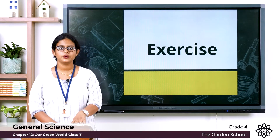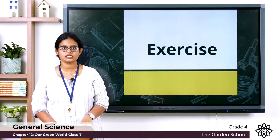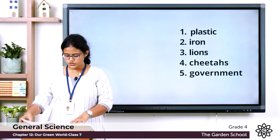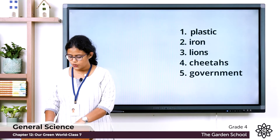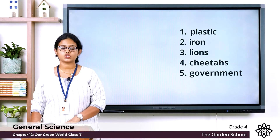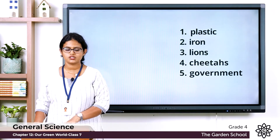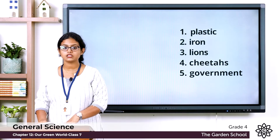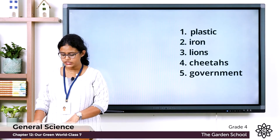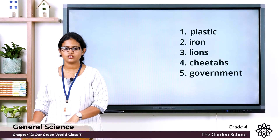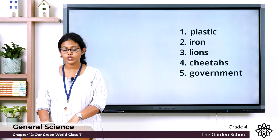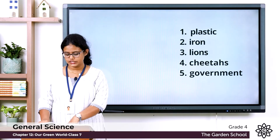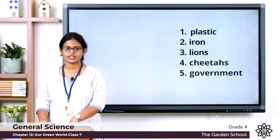Now let's see the answers. Question one: which of these is not a natural resource? The options are wood, plastic, wheat, and milk. The right answer is plastic.